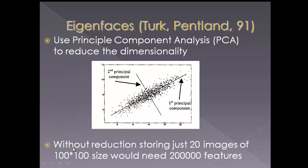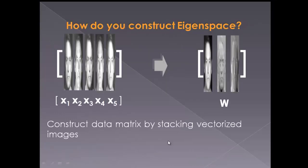Without reduction, storing just 20 images of 100x100 pixels would require an enormous number of features. So what we do is take a data matrix by stacking the vectorized images — all the images are stored as a matrix — and then we perform principal component analysis.